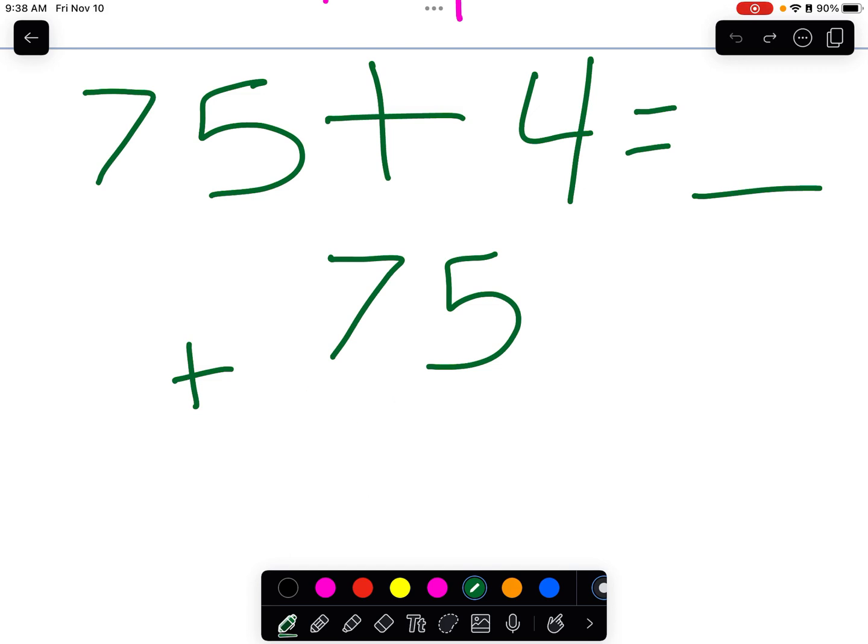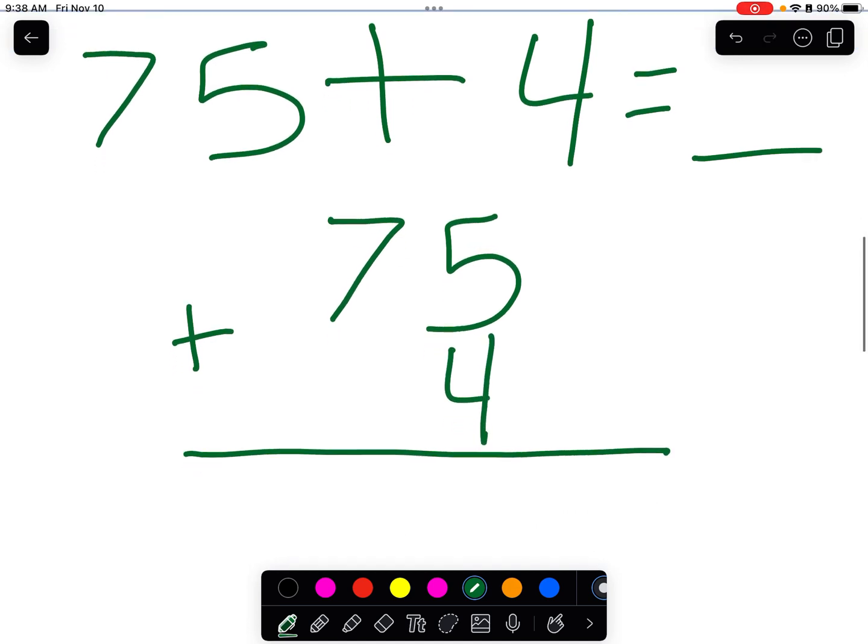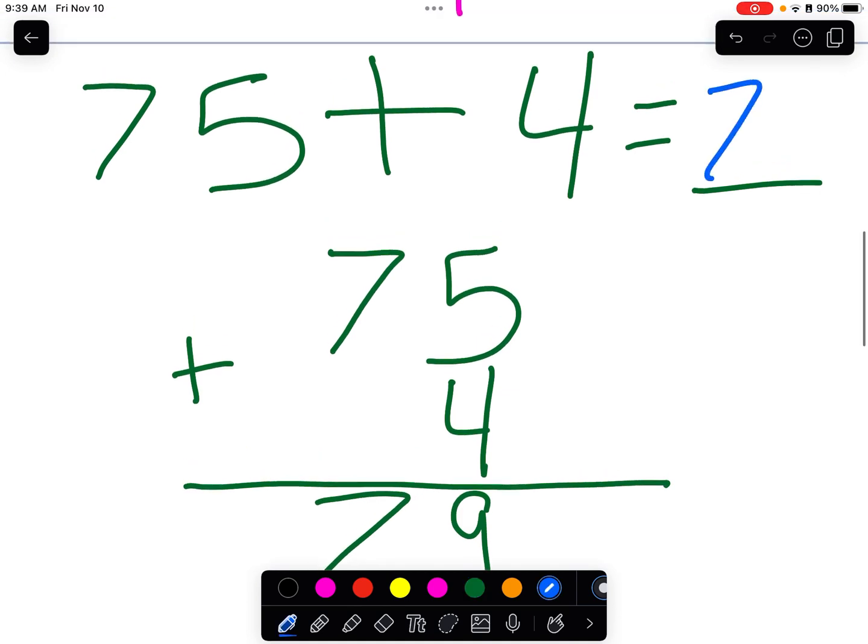We're not going to put the four here. Uh-oh, that's going to cause problems. We have to make sure that because four is in the ones place, that it goes under the ones place in the larger number. 75 plus four. Now, we're going to add five plus four. That's nine. And now we're going to add seven plus nothing, or which is the same as seven plus zero. And that is seven. 79. That's our answer. Our answer is 79.